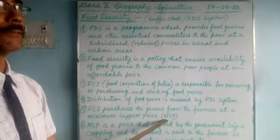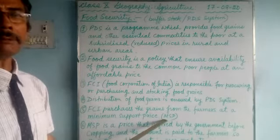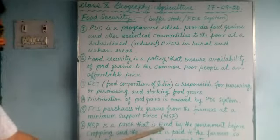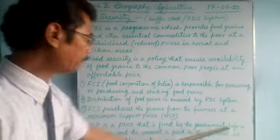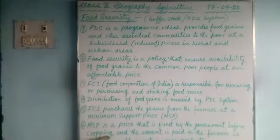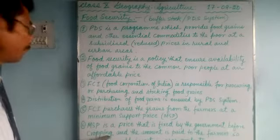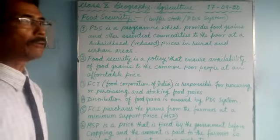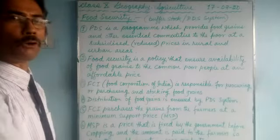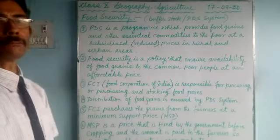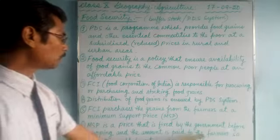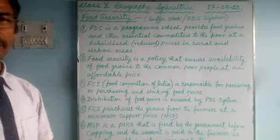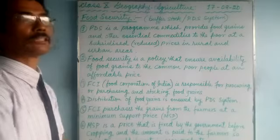If asked what MSP is, the answer is minimum support price. MSP is a price fixed by the government before cropping, before cultivation. Some amount is paid to the farmers beforehand so that it will help them to invest in crop production — for labor, seeds, and other inputs.